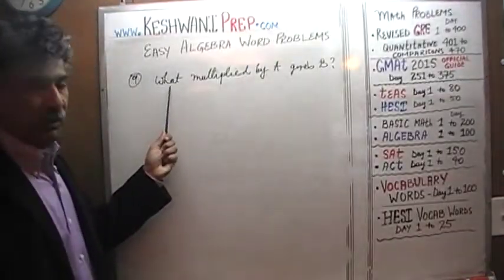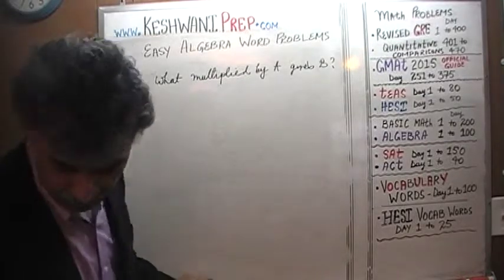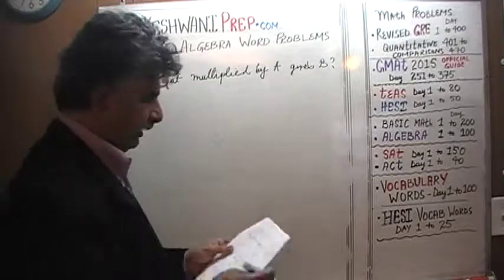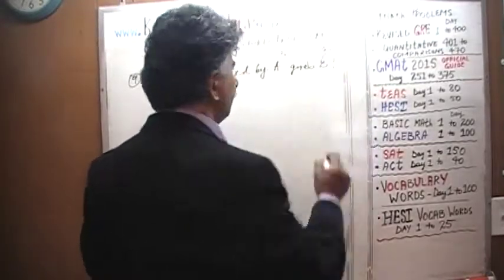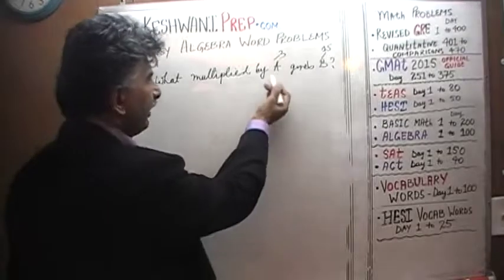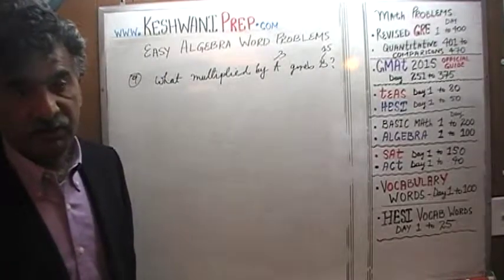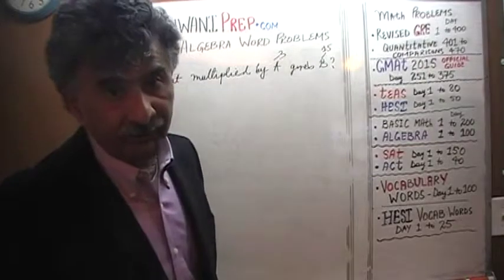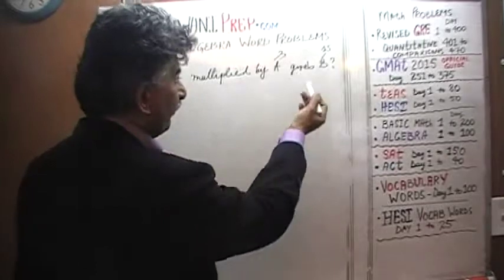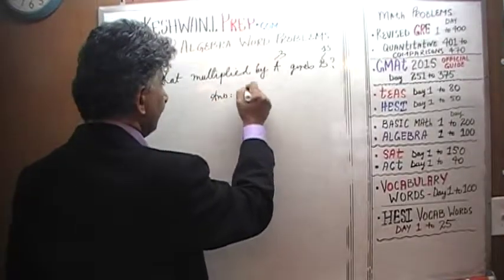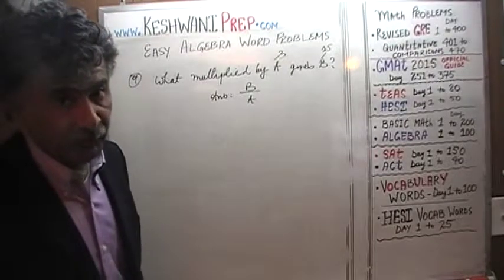So if you were asked: what multiplied by 3 gives us 15 — what would you say? The answer of course is 5, because 3 times 5 is 15. The question is how do we get 5? We got 5 by dividing 15 by 3. So the answer to the algebra problem is of course B over A. The answer is B over A.